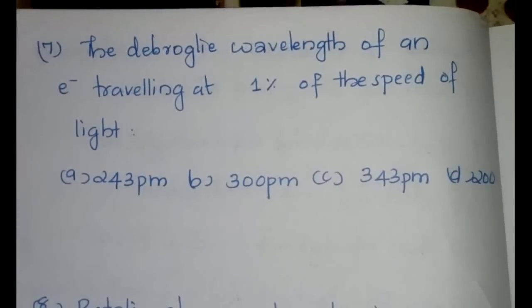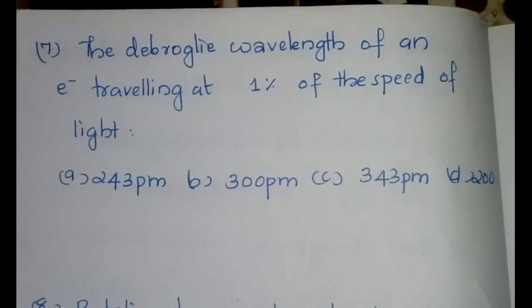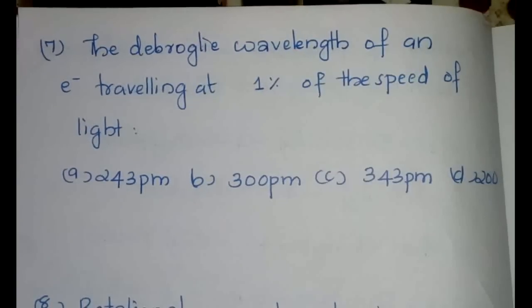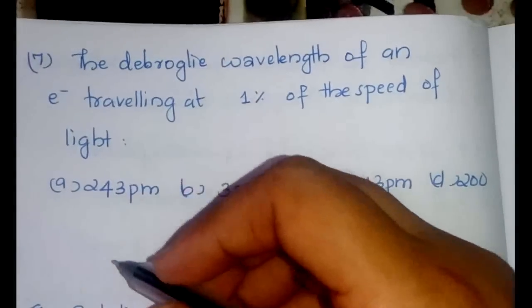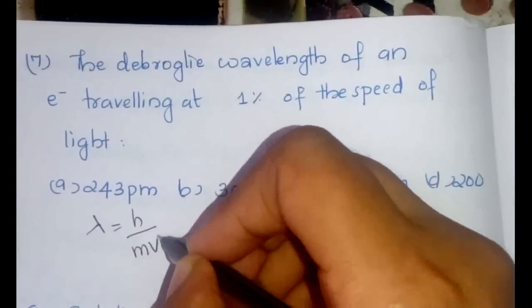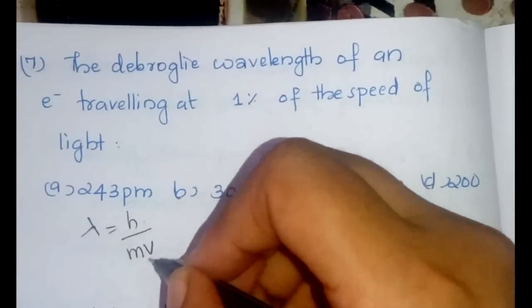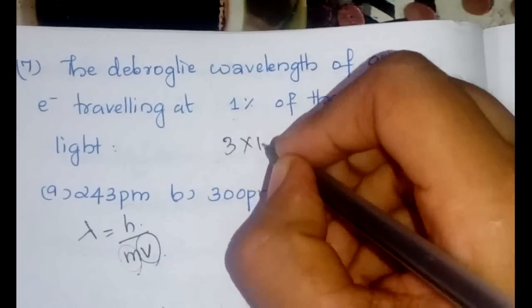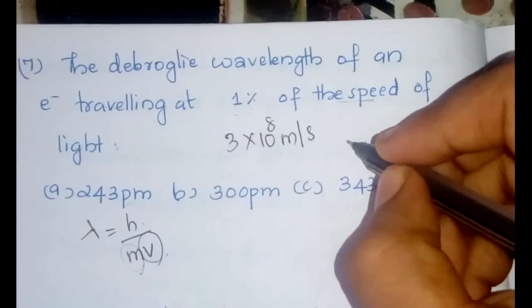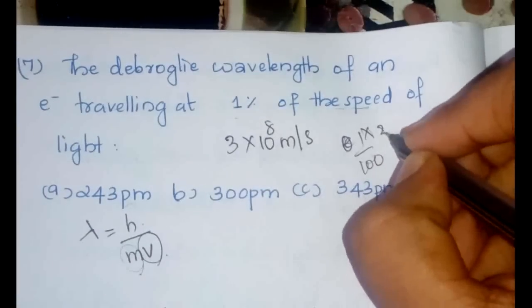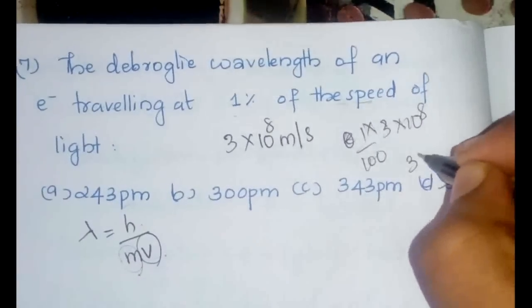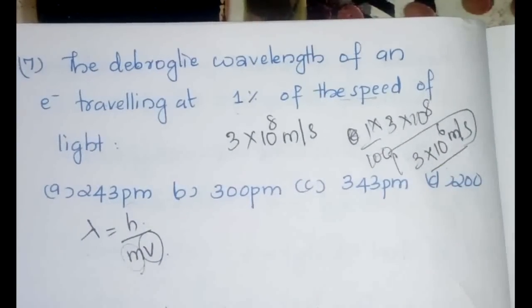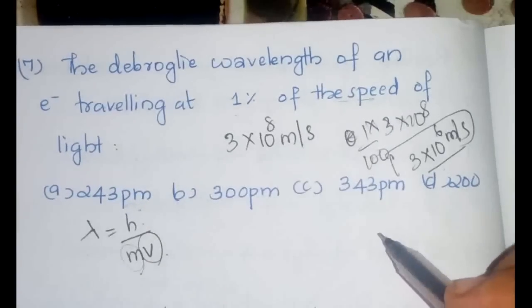Question here is from the de Broglie wavelength. That is a very simple question but you easily gain something like four marks here. The de Broglie wavelength of an electron traveling at one percentage of the speed of light. You know what equation we have to use here. Lambda is equal to H by mV where H is the Planck's constant, M is the mass of the electron and V is the one percentage of speed of light.